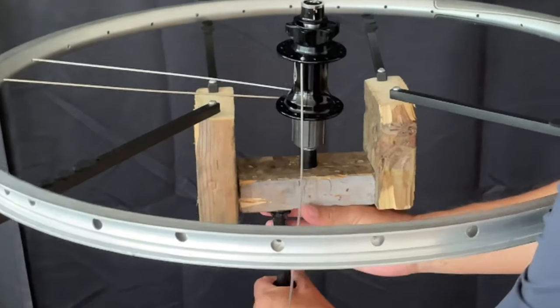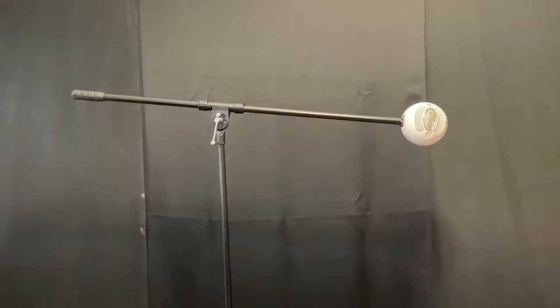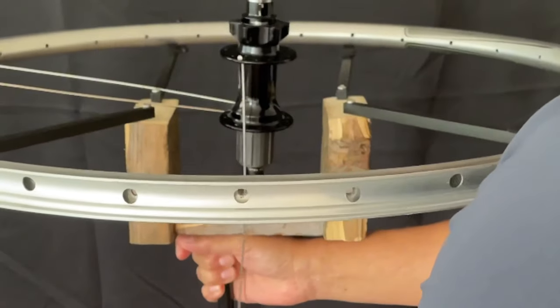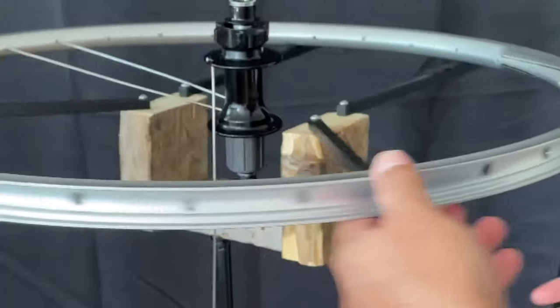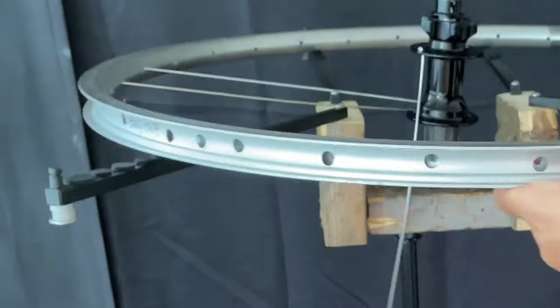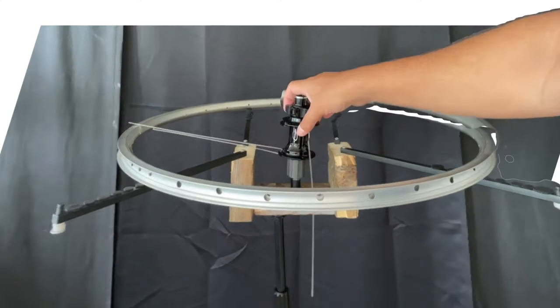So here we go, we have my stand here and the stand itself is a microphone stand that I got for free. As you can see I can raise it, lower it. The other parts there are from another stand and I'll show you that in a little bit. But what I can do is I can move the rim around and the hub just spins around.